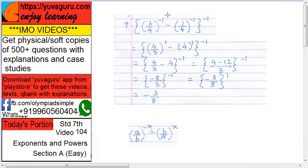So our expression becomes 4 upon 3 raised to 1 minus, this also becomes 4 upon 1, means you can write only 4, 4 raised to 1, the whole raised to minus 1. So 4 upon 3 minus 4, the whole raised to minus 1, solve this.